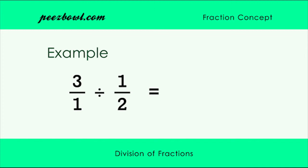As per the rule, write 3 upon 1 as it is and multiply this with the reverse of 1 upon 2 which is 2 upon 1. The result of this multiplication comes as 6 upon 1 which is nothing but 6. Hence dividing 3 with 1 upon 2 will result in 6.